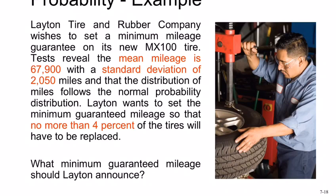The mean mileage is 67,900 with a standard deviation of 2,050, and the data is normally distributed. They want to set the minimum guarantee mileage so that no more than 4% of the tires will be replaced.